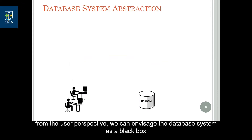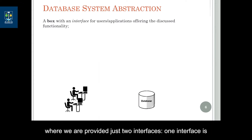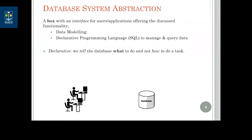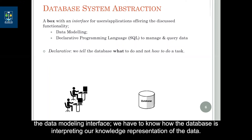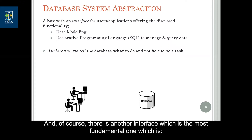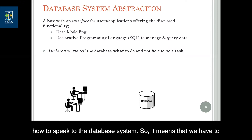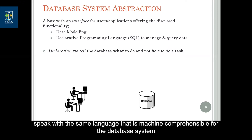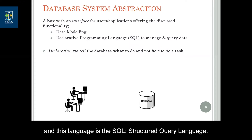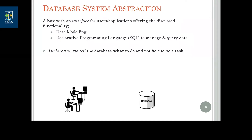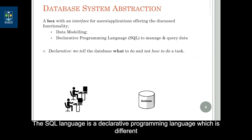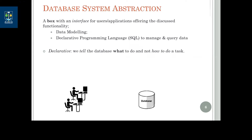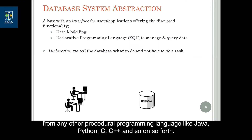From the user perspective, we can envisage the database system as a black box where we are provided just two interfaces. One interface is the data modeling interface — we have to know how the database system interprets our knowledge representation of the data. The other interface, which is the most fundamental one, is how to speak to the database system, meaning we have to use a language that is machine comprehensible for the database system. This language is SQL — the Structured Query Language. SQL is a declarative programming language, which is different from procedural languages like Java, Python, C, and C++.